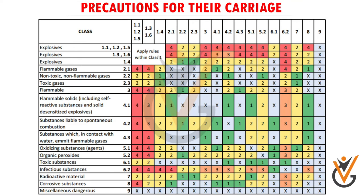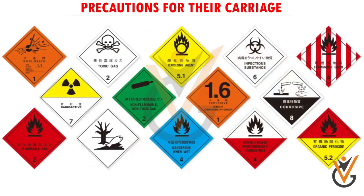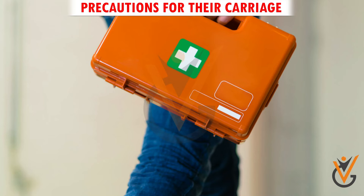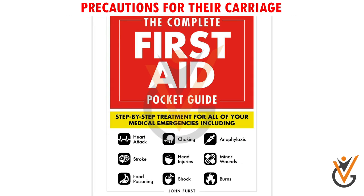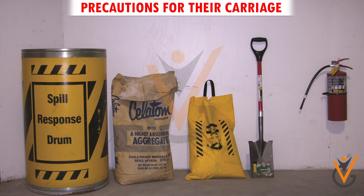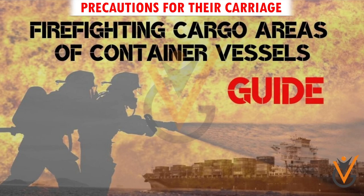Segregation or separation of the dangerous goods from the rest of the cargo is given in the IMDG Code. First aid to be given in case of accidental exposure to the dangerous substance is prescribed in emergency first aid procedures. Any special equipment to be worn while cleaning up a spill, related guidelines, and special firefighting methods for specific types of cargo are also covered.